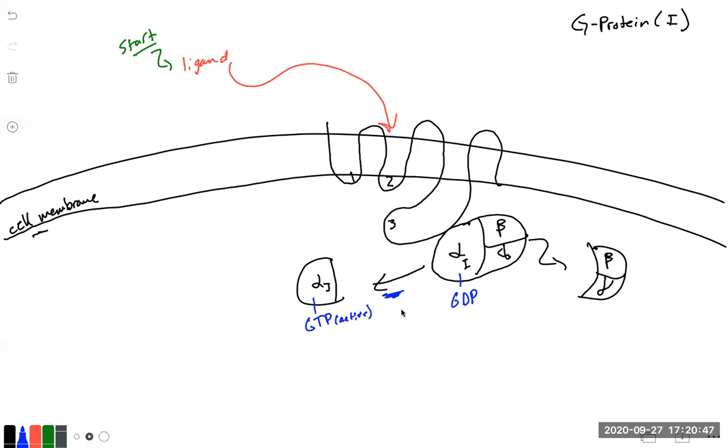So now this subunit can do its part. Well, if we remember in our last lecture, there is a protein called adenylyl cyclase. And it's responsible for converting cyclic AMP from ATP to cyclic AMP.